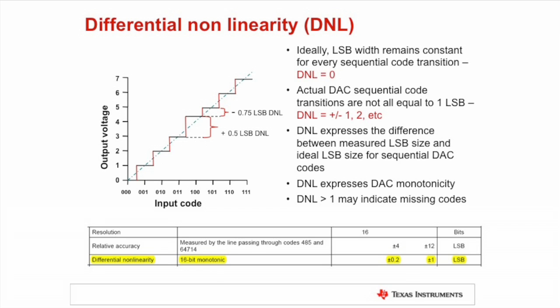DNL could be specified across each and every DAC code, and there's usually a graph included in the datasheet that shows this, but in the electrical characteristics table we simply show the worst-case as a typical value and a maximum value.